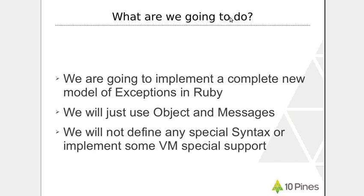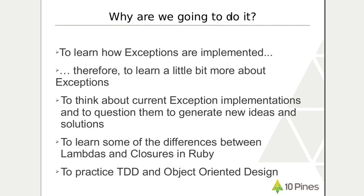You may be wondering why we're going to do this. The idea is that we're going to do it to learn how exceptions are implemented. We as programmers usually don't see how exceptions work, how they are implemented. They are implemented in the VM as a kind of magic for us. So the idea is to implement exceptions using just objects, and to use this exercise to question a little bit the status quo of the current exception implementation in all programming languages.